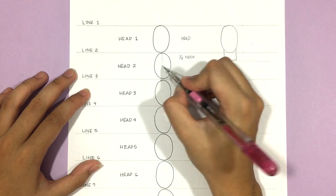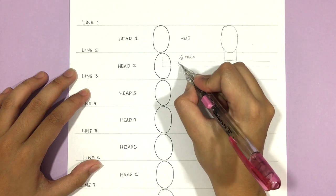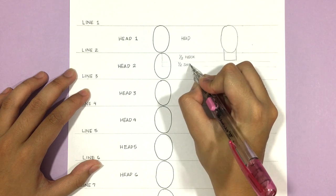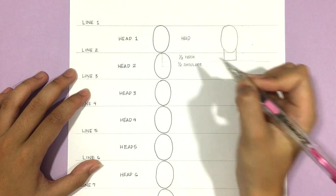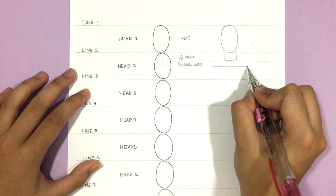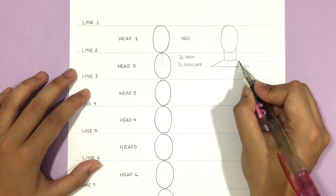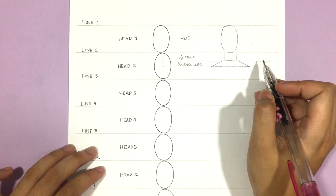Then half of head two is for the shoulders. And there are no set measurements for the length of the shoulder line. It can be as narrow or as broad as you want. And I will explain more of this in the follow up video. For now, I'm drawing the line to be roughly wider than the head.